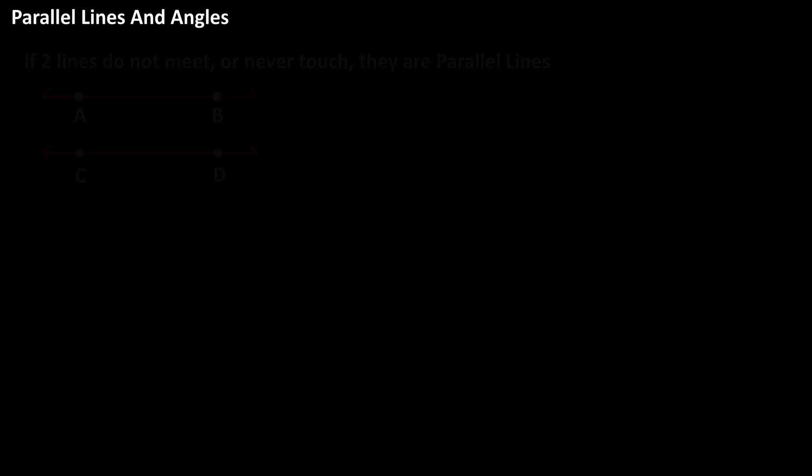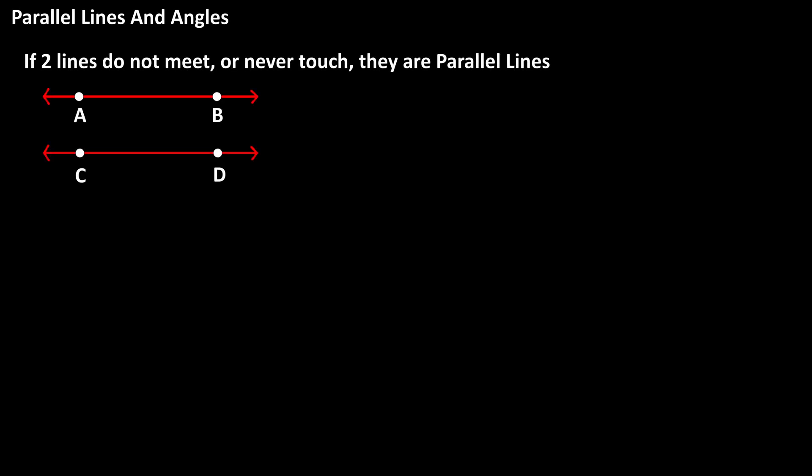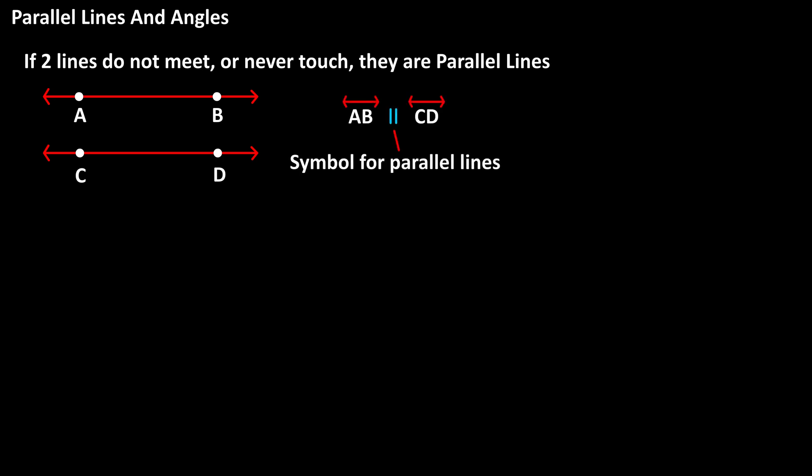If two lines, such as line AB and line CD, do not meet or never touch, they are parallel lines. The symbol for parallel lines is two vertical lines, so line AB is parallel to line CD.